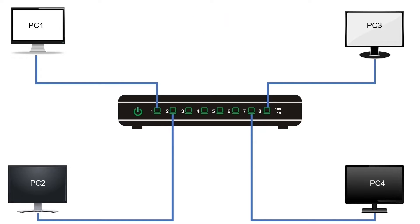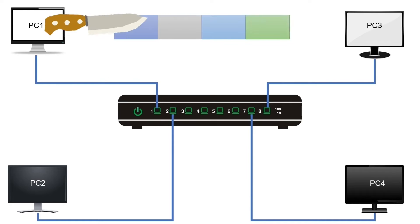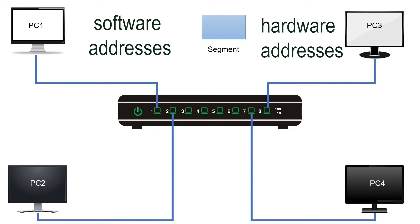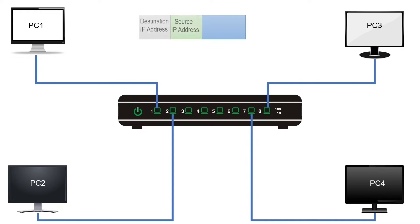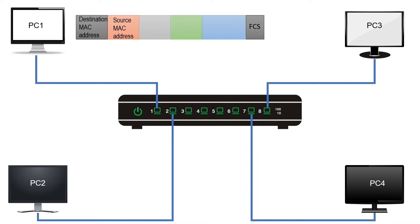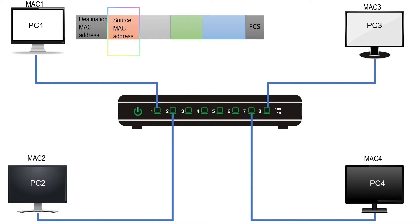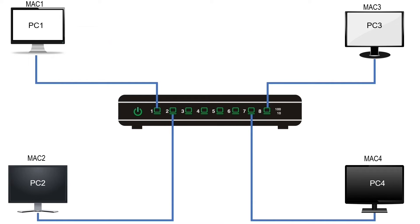When a PC wants to send a data stream, it breaks it into small pieces called segments. There are two types of addresses: software addresses and hardware addresses. The device attaches both to each segment. It first adds software addresses, also known as IP addresses — a segment with IP addresses is called a packet. It then attaches hardware addresses, also known as MAC addresses — a packet with MAC addresses is called a frame. A switch understands and uses only hardware addresses to process frames. When it receives a frame, it reads the source and destination MAC addresses. It uses the source address to learn about the connected device and the destination address to make a forwarding decision.